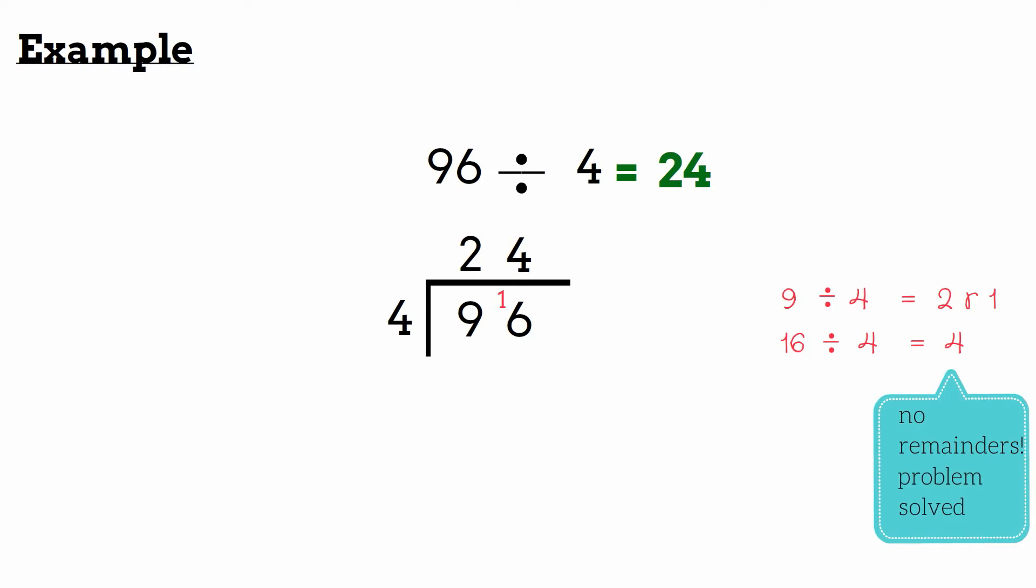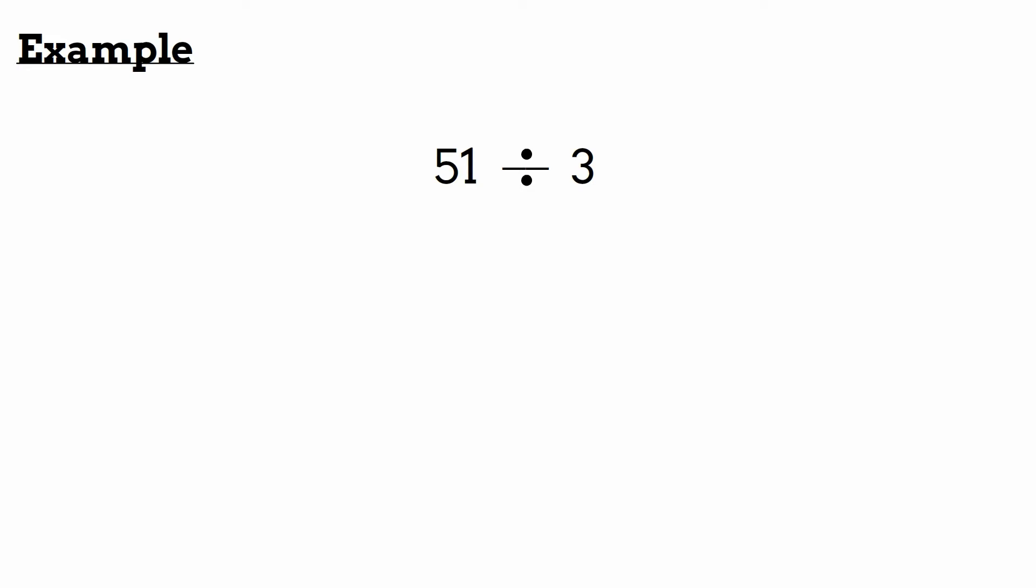Now here's another example: 51 divided by 3. We'll start off by drawing the bus stop, then we'll put 51 inside the bus stop and leave 3 outside the bus stop. Now let's start with the first number, 5.